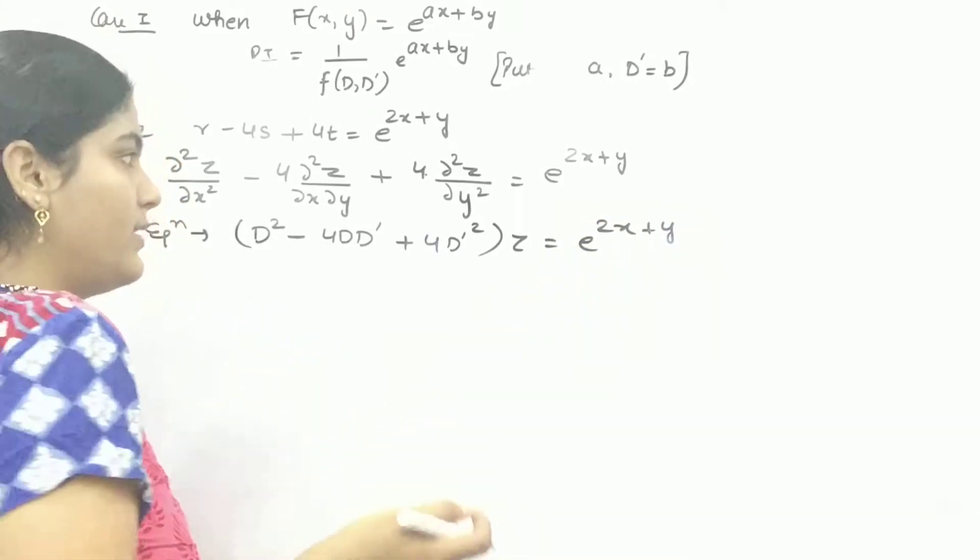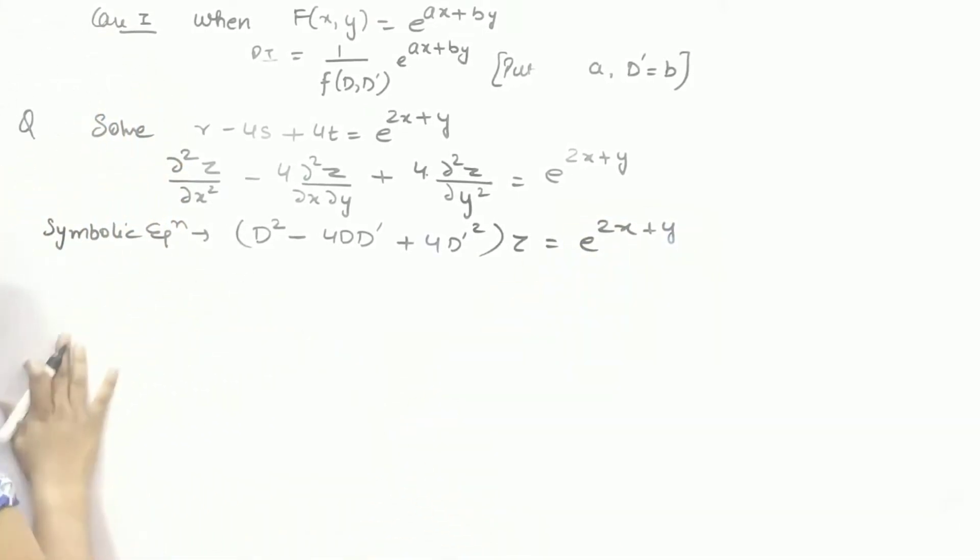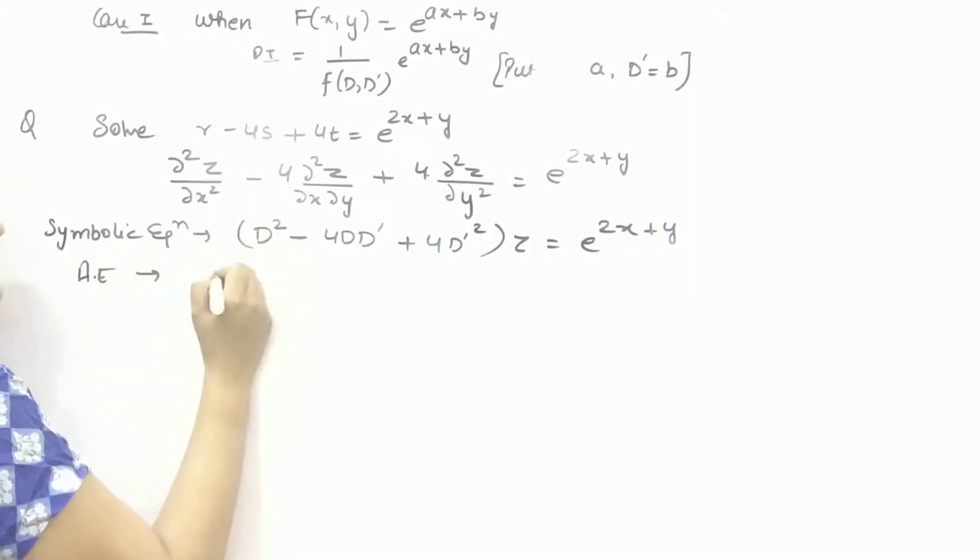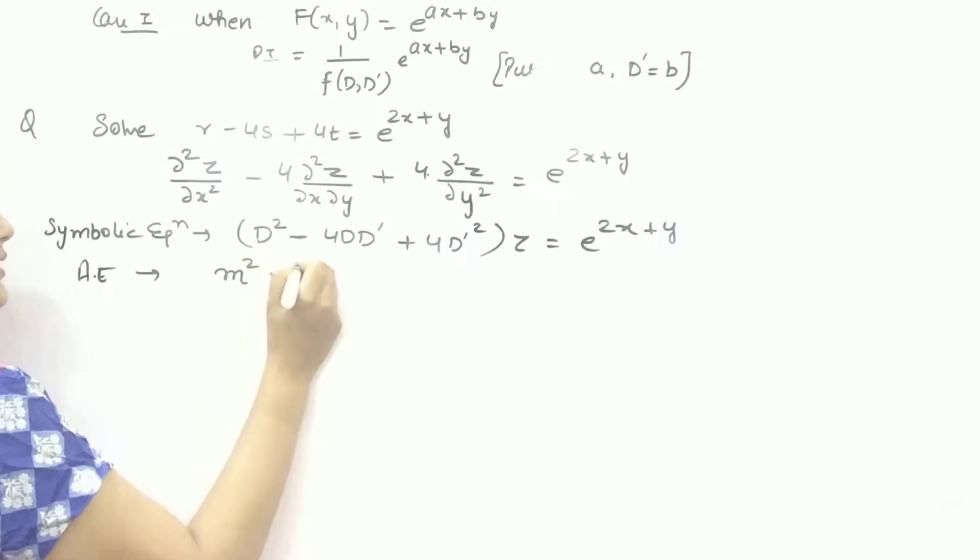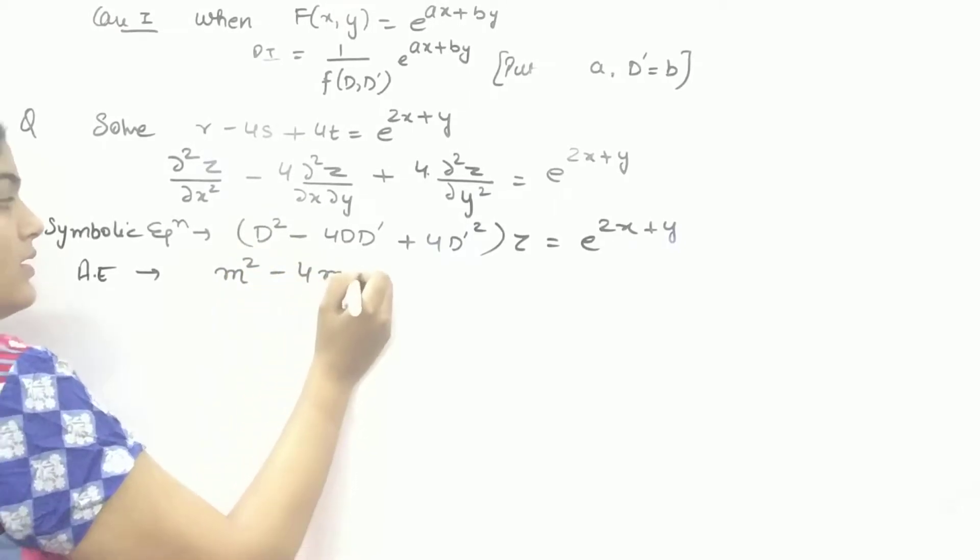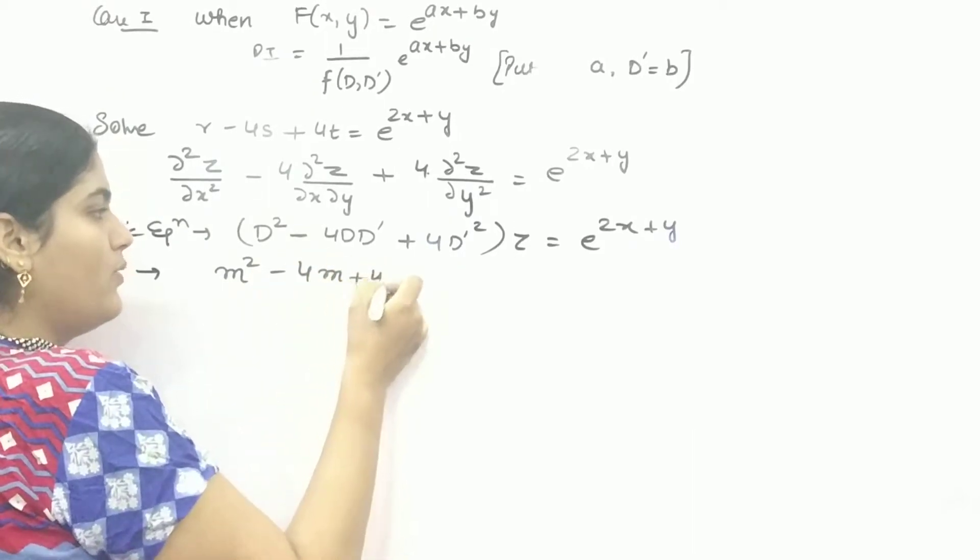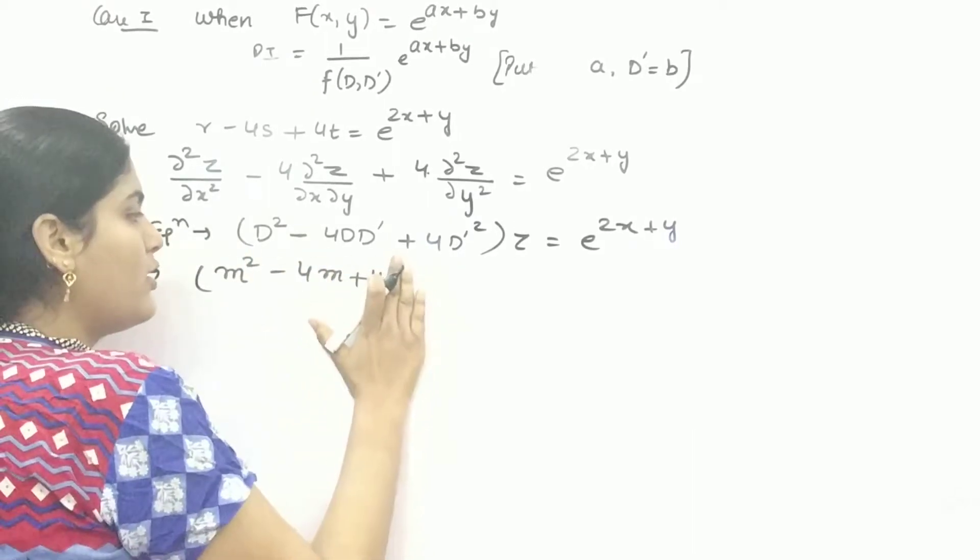Now, next part is, as similar as we did in last video, auxiliary equation. Put M in place of D. So, M put one in place of D dash. So, 4. This is your auxiliary equation.